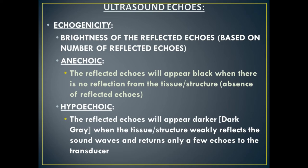Black things on ultrasound are our fluid-filled structures: blood vessels, cystic fluid collections, milk ducts — these are the types of things that appear black on ultrasound. When the sound wave goes into the tissue and returns a weak echo, you get back a dark gray color inside whatever area you're looking at. We call this hypoechoic, meaning the structure very weakly reflected the sound wave, so a very weak reflection comes back to the transducer.